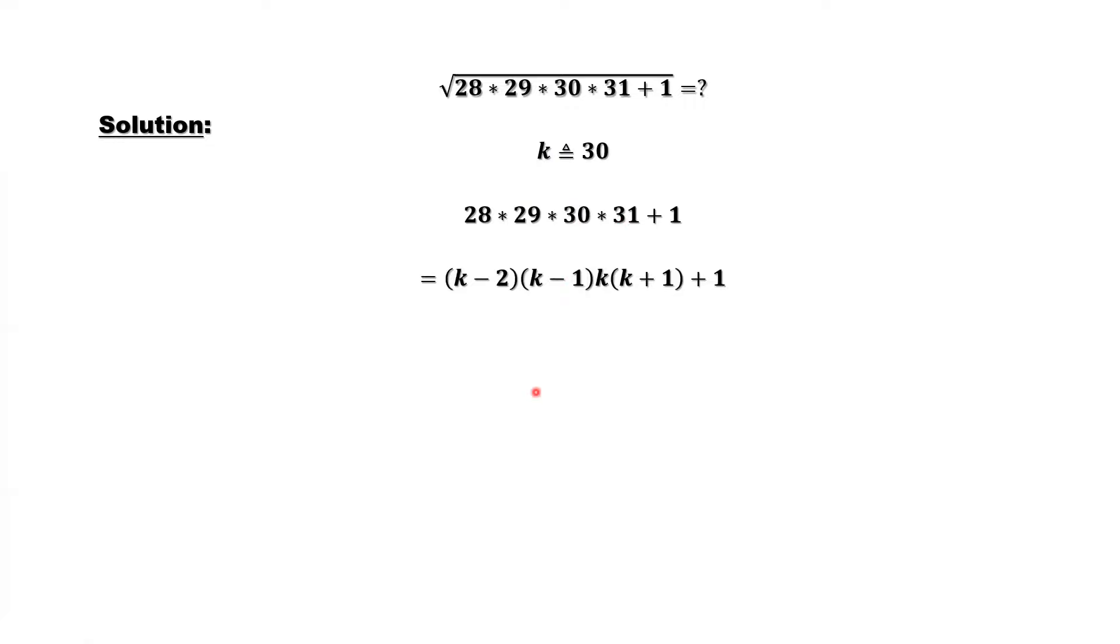Next thing, we want to group the first term from this product with the last term, and group the two middle terms. Expand the first part and the second part. The first part is k square minus 2k minus 2. The second part is k square minus k.